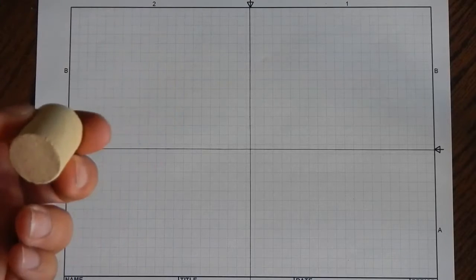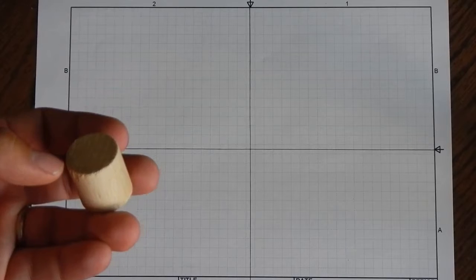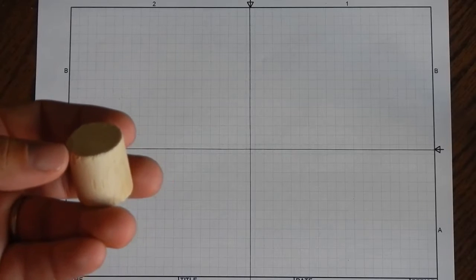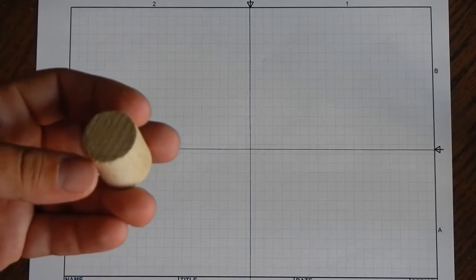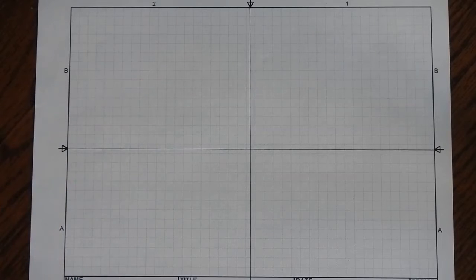But what if you don't have something to trace? What if you're sketching a circle and you've got to do it from your head, from your memory, your image that you're thinking of for an object? So we're gonna look at a series of steps here that allow us to do that.